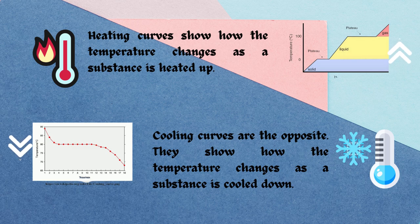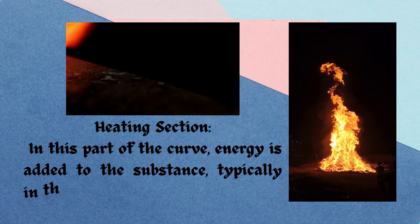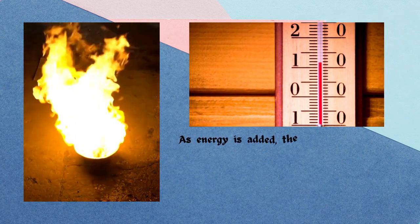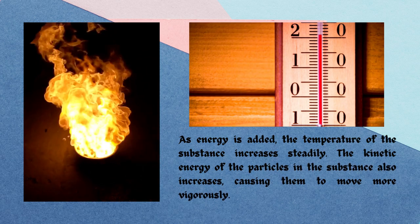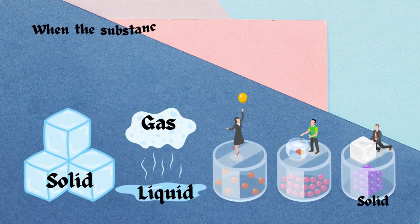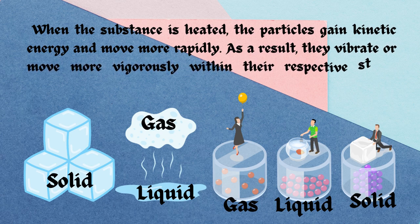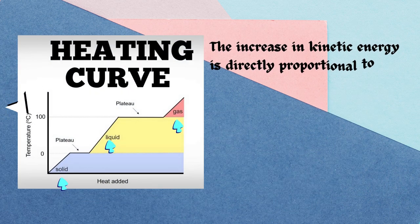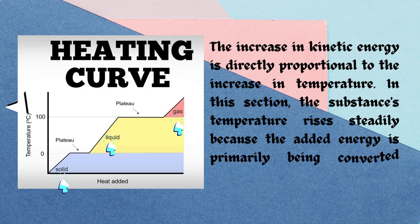Heating curves show how temperature changes as a substance is heated, while cooling curves show the opposite. In the heating section, energy is added to the substance in the form of heat, causing the temperature to increase steadily. The kinetic energy of the particles also increases, causing them to move more vigorously — vibrating or moving more rapidly within their respective states: solid, liquid, or gas. The increase in kinetic energy is directly proportional to the increase in temperature.